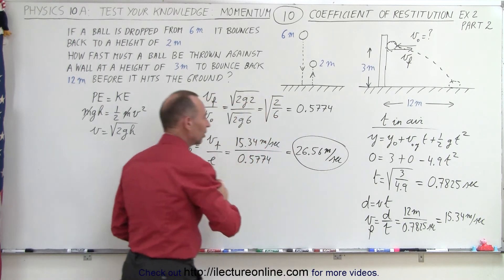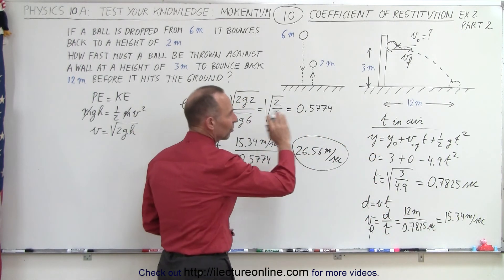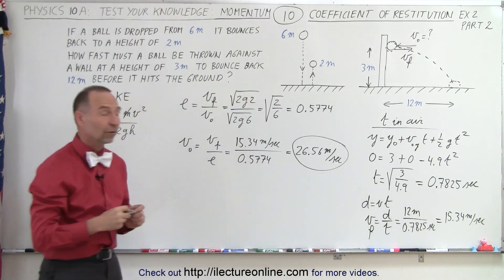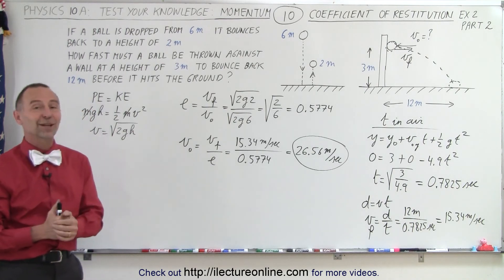If you throw it that fast, the ball will bounce back with a speed of 15.34 meters per second, which is then enough speed to reach a distance of 12 meters before it hits the ground. And that is how it's done.